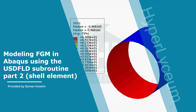As you know in the previous video the cylinder was made by solid elements. In this simulation however we're going to use shell elements and we're going to apply the required changes in Abacus settings and in the coding.